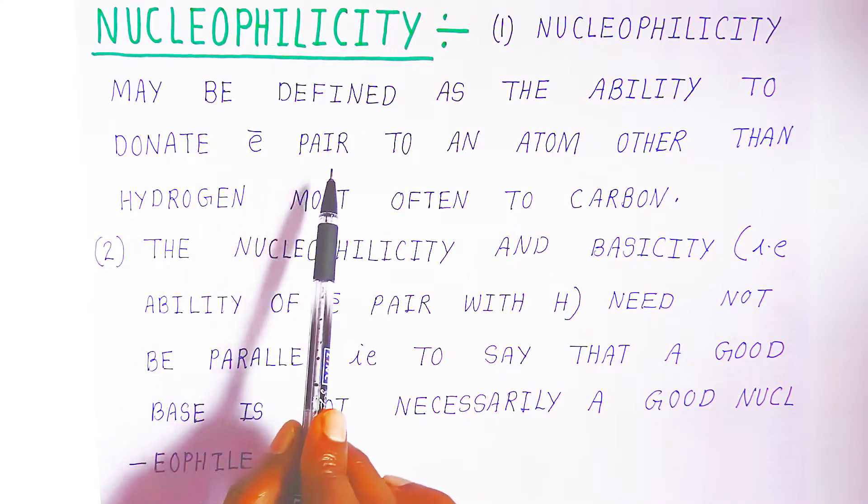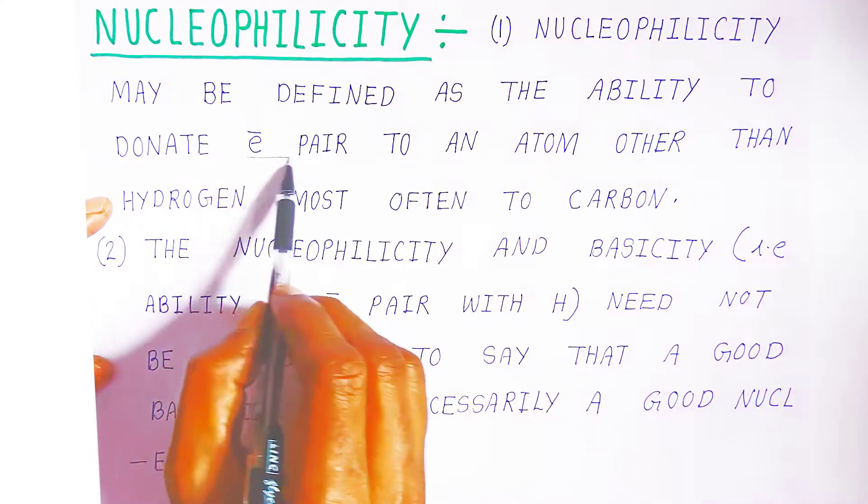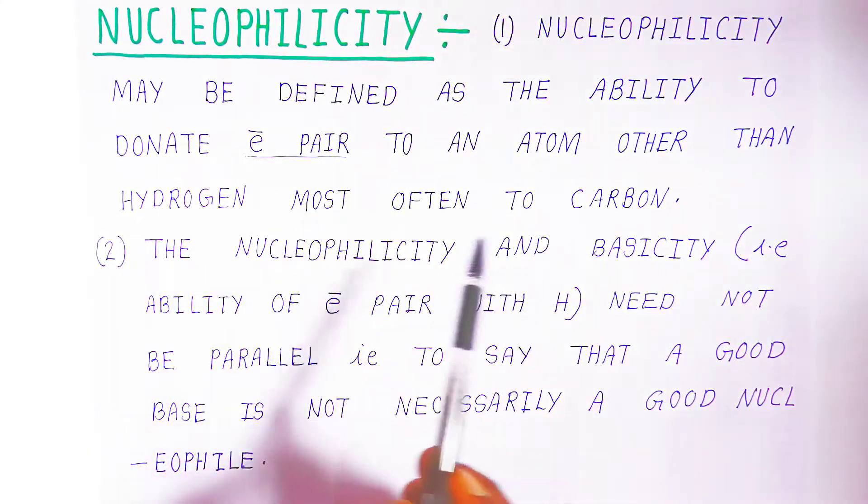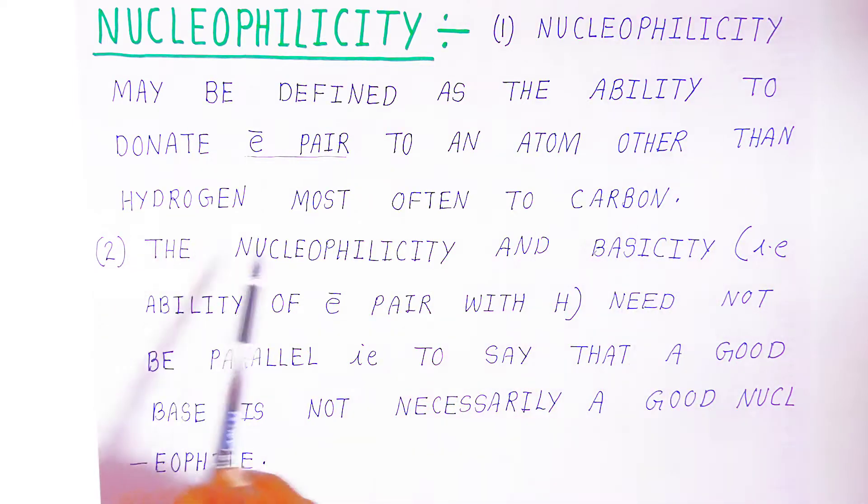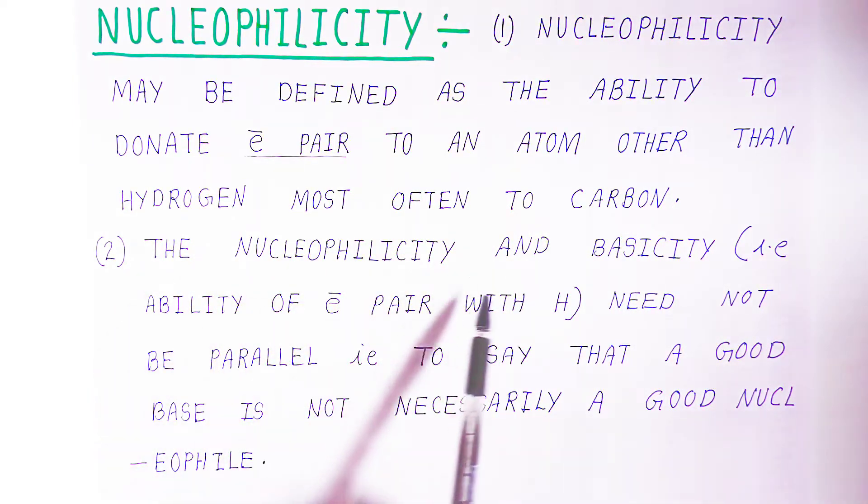Mostly we are donating the electron to the carbon. That is called as Nucleophilicity - ability to donate electron pair. Here we are talking about pair. We are donating electron pair to an atom other than hydrogen, mostly we are donating to carbon.